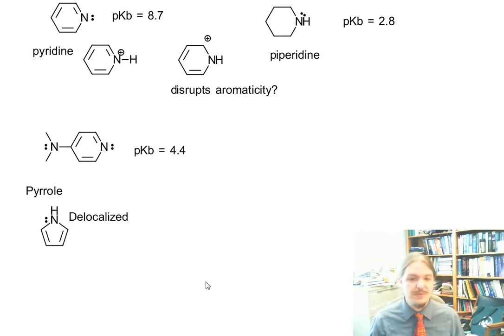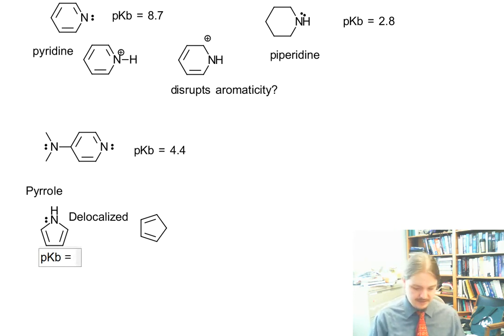if you can identify that this lone pair is delocalized, then you would already expect pyrrole to be significantly less basic than pyridine. The pKB of pyrrole is 13.6. Pyrrole is an extremely weak base. It's about as basic as water.